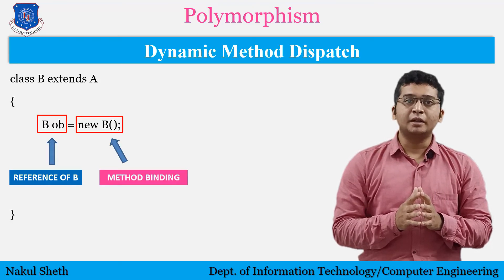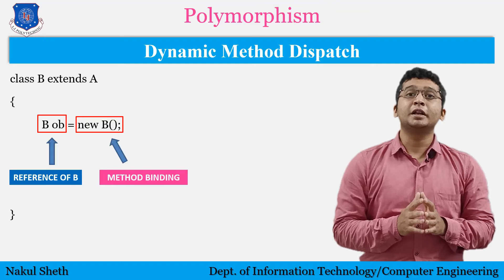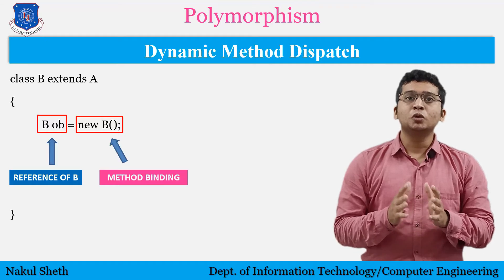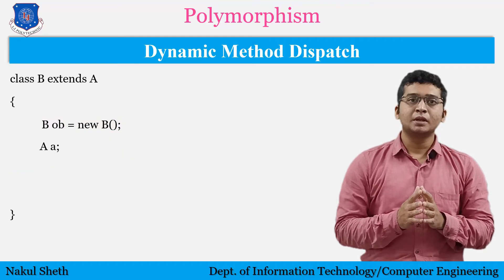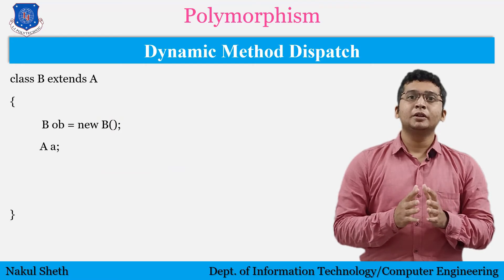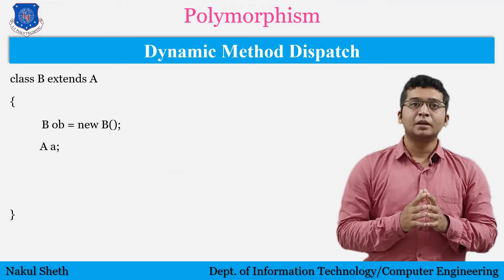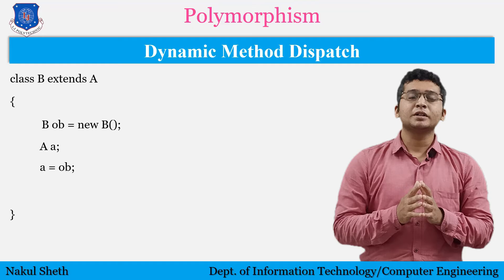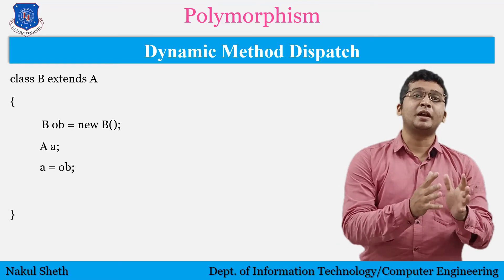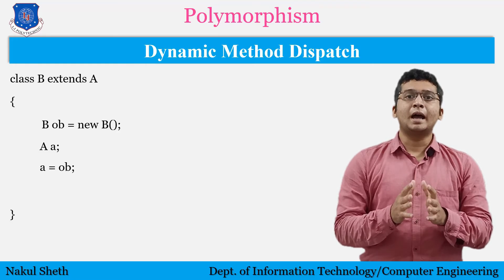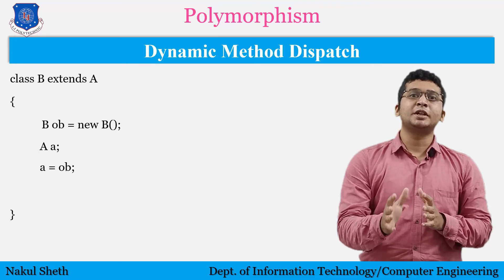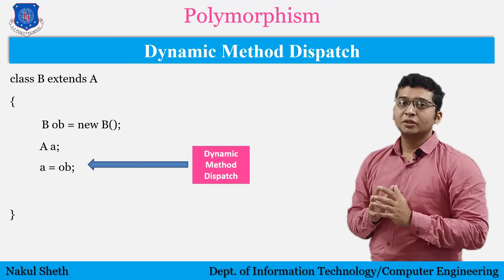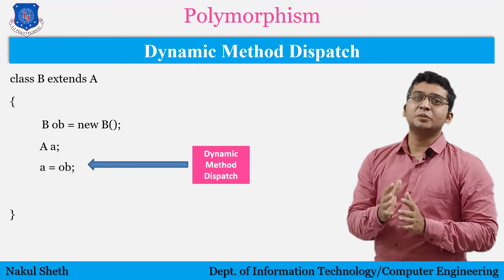This method binding is very important in the case of inheritance because a parent reference can point to a child reference. For example, if I take a reference of class A using 'A a' and then write 'a = ob', I have assigned a reference of the child class to its parent class. Whenever this type of statement is written, the concept of Dynamic Method Dispatch occurs.